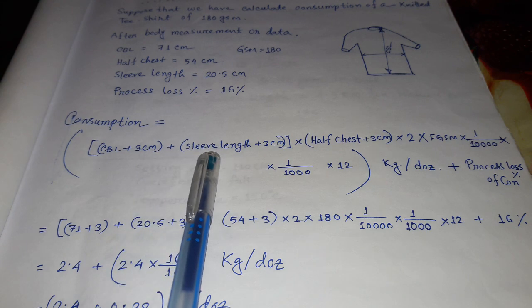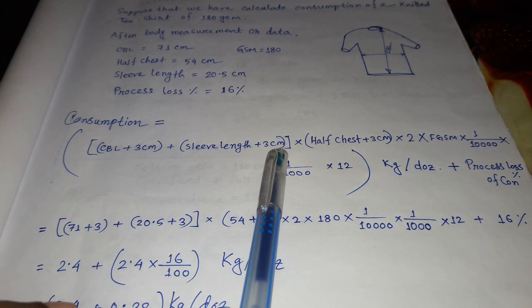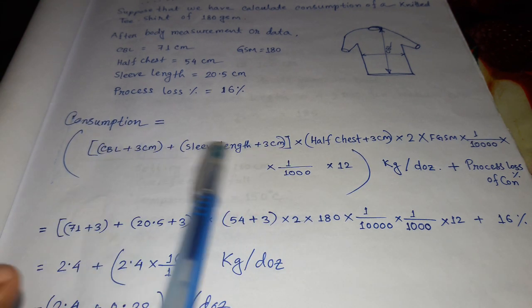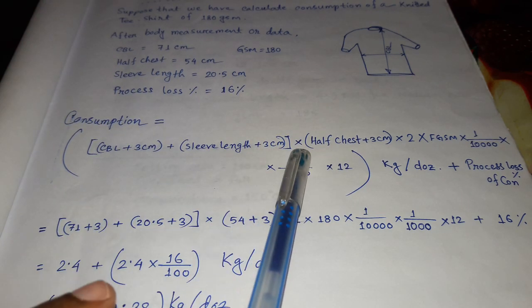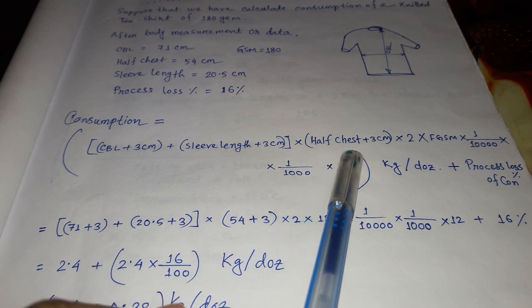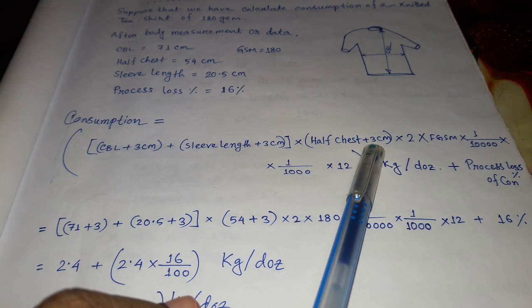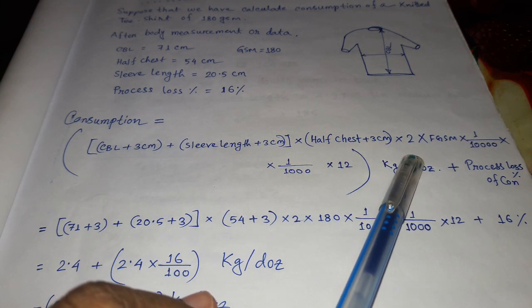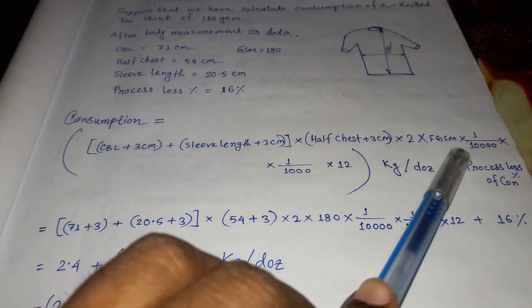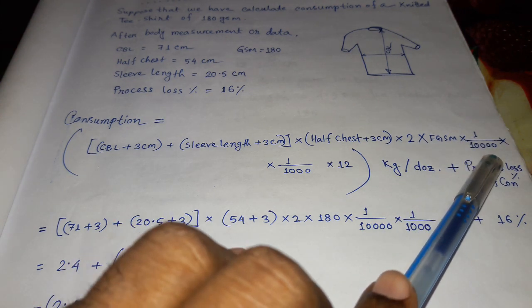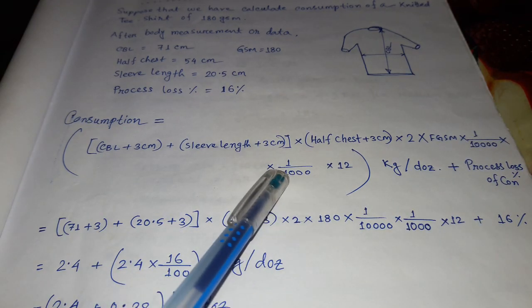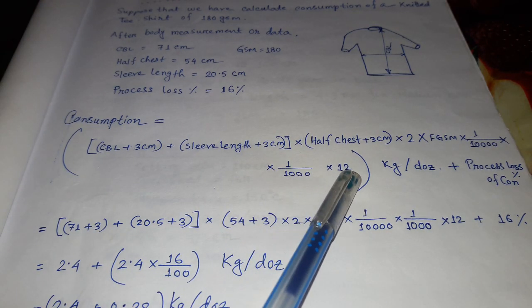Plus sleeve length plus 3 cm allowance. Both of these we have to add, then multiply by half chest plus 3 cm allowance into 2, into finish GSM, into 1 per 10,000, into 1 per 1,000, into 12.